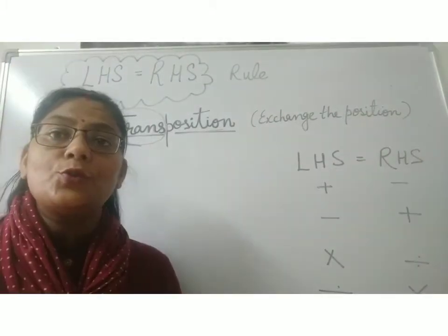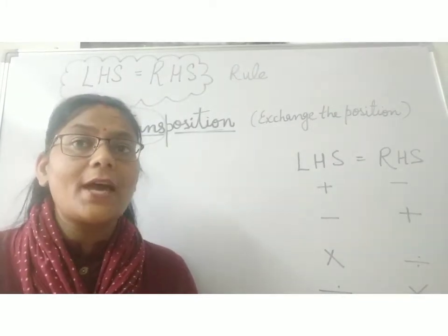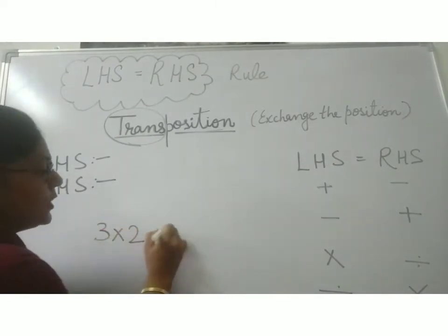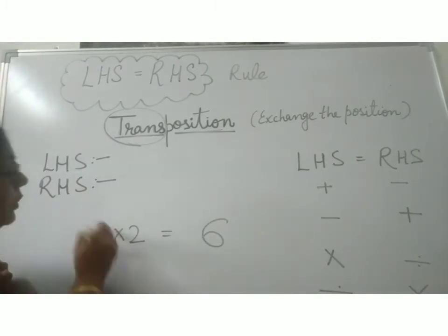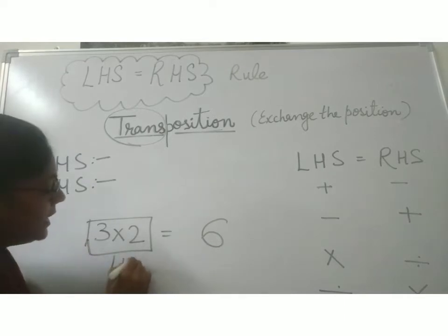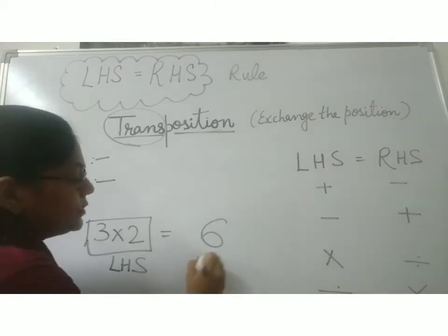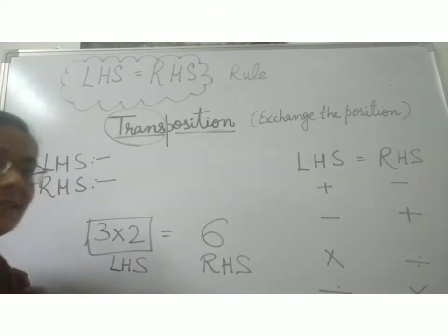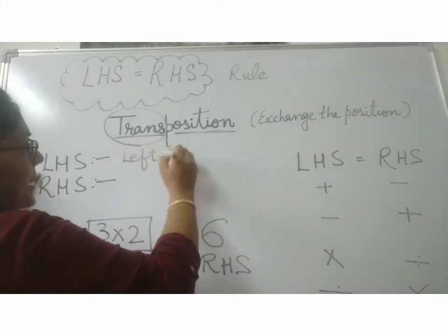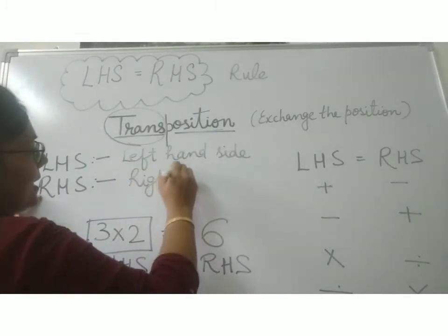And what are those two things? In the equation, two sides are there. Suppose I am writing here 3 multiplied by 2 is equal to 6. So, 3 multiplied by 2 is given at the left hand side, so this has become LHS. And 6 is given at the right hand side, so this will become RHS. LHS stands for left hand side and RHS stands for right hand side.